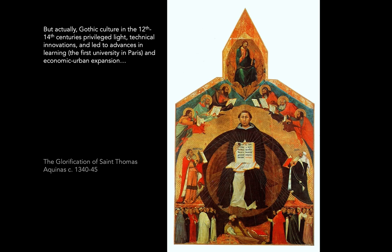The Gothic period also privileges light. This is why it's interesting to trace the term backwards, because everything you might associate with goth or gothic today is dark — literally dark, devoid of light. But in fact in the Gothic period there's this turn towards light. Light itself is going to play a huge factor in the architecture we look at. To illustrate this, there's a really wonderful altarpiece that shows St. Thomas Aquinas in the middle.